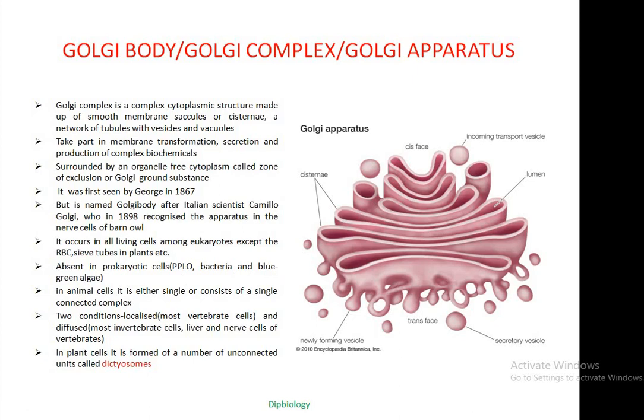In animal cells, the Golgi body is either single or consists of a single complex. In vertebrate cells, in most cases it is localized, remaining as diffuse forms except in liver and nerve cells of some vertebrates. In the case of plants, it is formed of a number of unconnected units called dictyosomes.